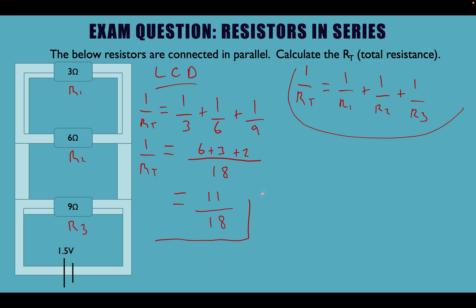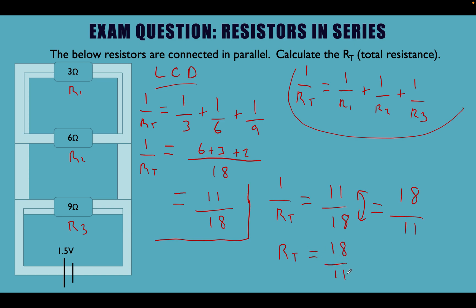Now, if we know that 1 over the total resistance — the reciprocal — equals 11 over 18, what we need to do to get the actual resistance value is flip these round. So we write it as 18 over 11. If 1 over Rt equals 11 over 18, then Rt — the total resistance — equals 18 over 11.